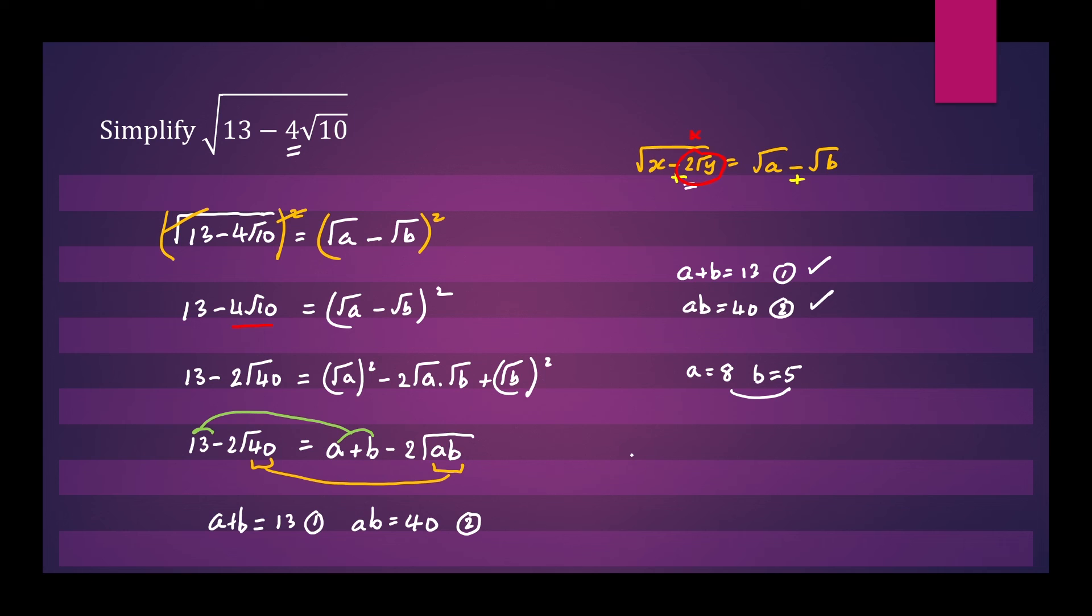Let's write down the original question. We have 13 minus 4 root 10 is the same as root 8 minus root 5. When we take the square root of this number we should get a positive answer and this is why I let the larger term be the first number. And root 8 can be simplified as 2 root 2 minus root 5. So this is your final answer. Thanks for watching.